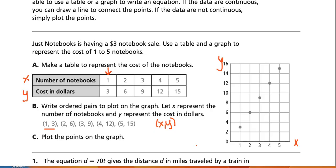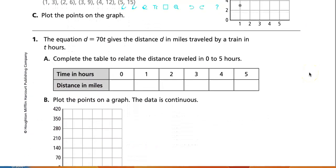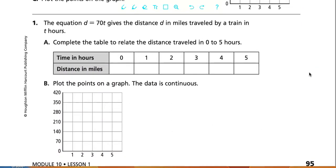All right, let's go ahead and do the next problem. The equation d equals 70t gives the distance in miles by a train in t hours. Complete the table to relate the distance traveled in 0 to 5 hours. Now the distance traveled depends on the amount of time traveled.